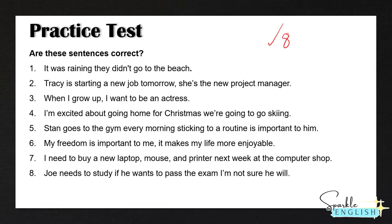Let's correct these together. Number one is incorrect — this is a run-on sentence. 'It was raining, so they didn't go to the beach.' We add a comma after raining and put the coordinating conjunction 'so.' Number two is incorrect — this is a comma splice. 'Tracy is starting a new job tomorrow; she's the project manager.' We add a semicolon because both sentences are closely related, and we do not capitalize 'she's' after the semicolon.